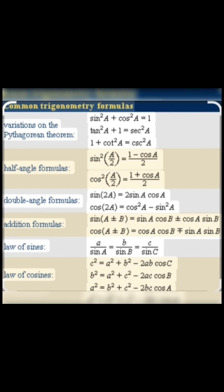a upon sin A is equal to b upon sin B is equal to c upon sin C. These formulas are very important. Now we shall read the next formulas.